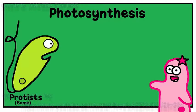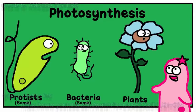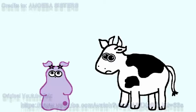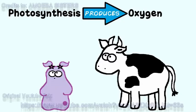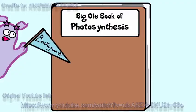Some types of protists can do photosynthesis. Some types of bacteria can. And, of course, plants can. Plants will be our focus for this video clip. Animals and amoebas just sort of missed out on this ability. But we do benefit from it greatly, as this process also produces oxygen, the very gas that we need in order to breathe. So this process is important for us to understand.